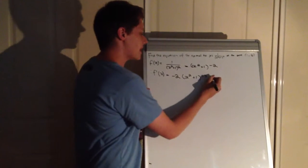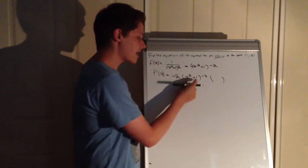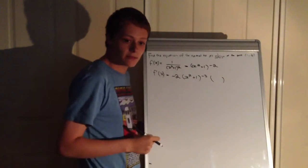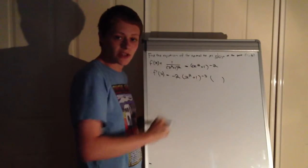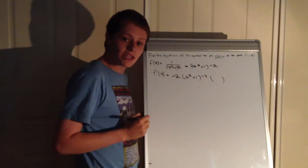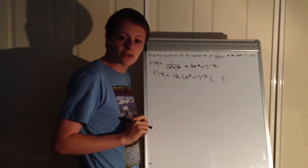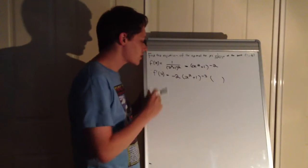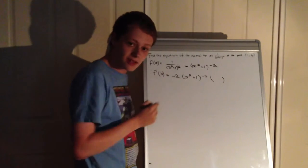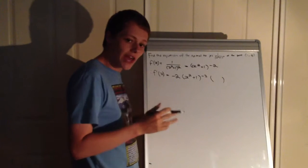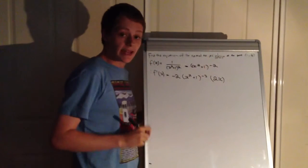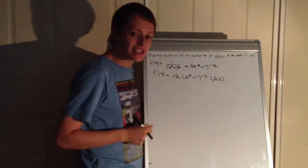Following this, we then take the derivative of the terms that are in the bracket. We have x² + 1, so the derivative of a constant is always 0, so we can ignore that. But we need to take the 2 that's in the exponent position and put it into our coefficient position in front of x. So 2 times 1 is x, and then we subtract 1 from our exponent, so 2 take 1, and that makes it 2x. And there we go, we have differentiated this equation.